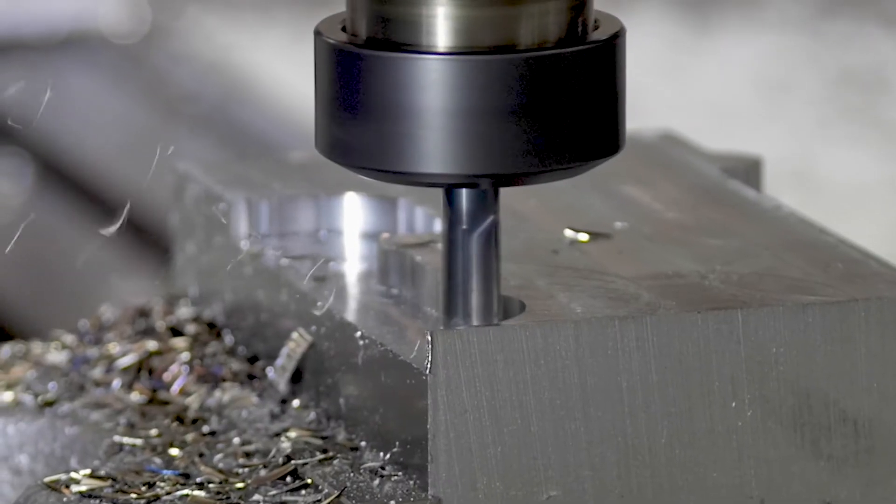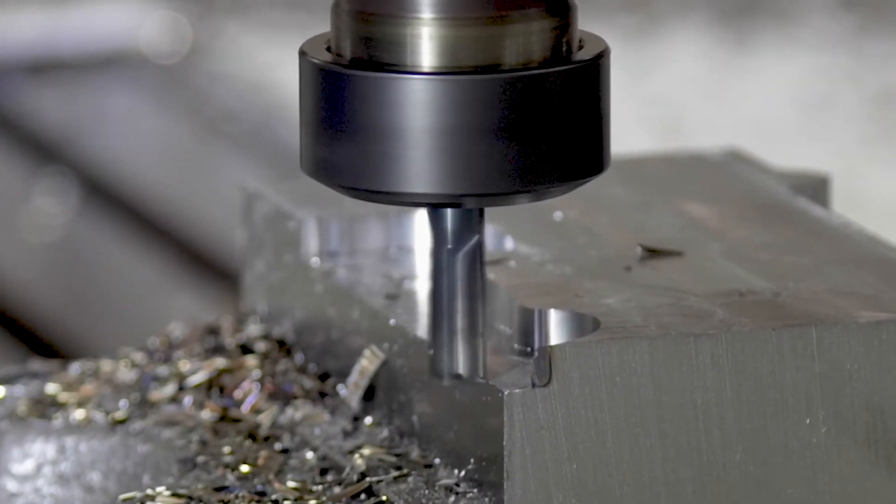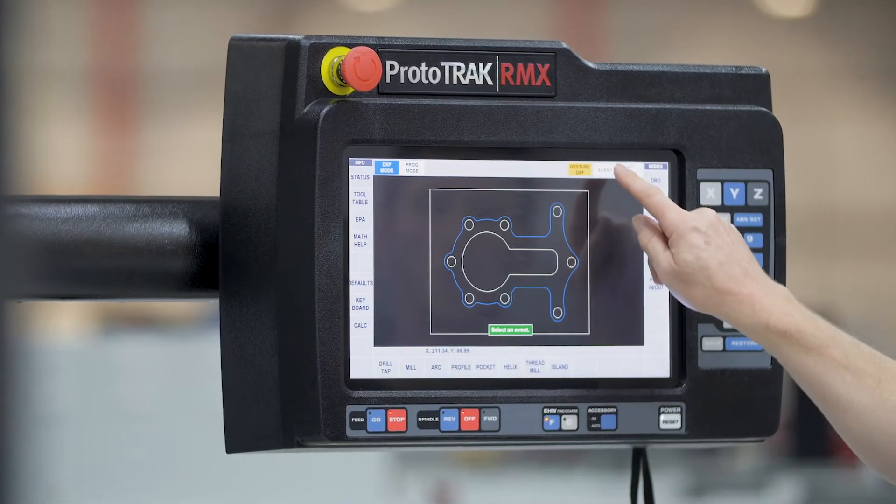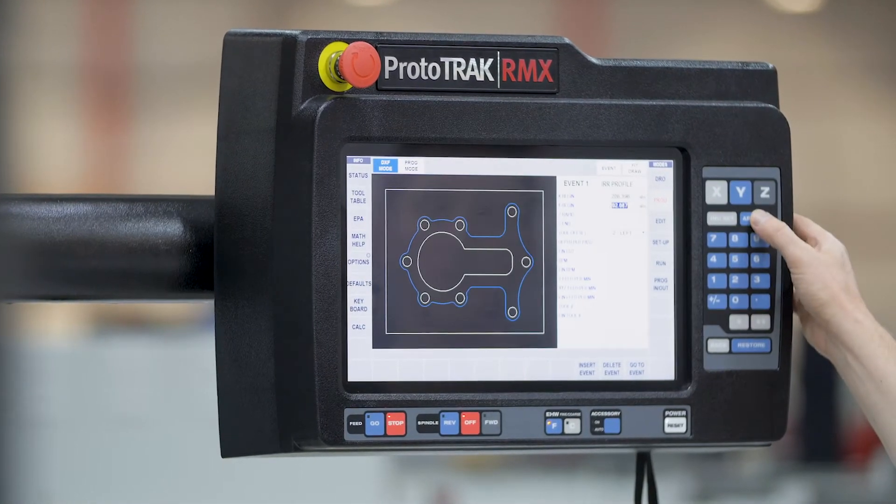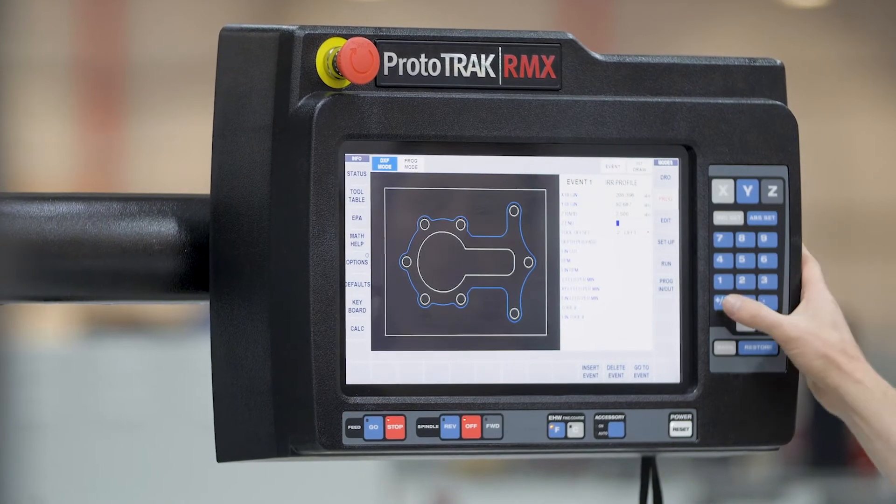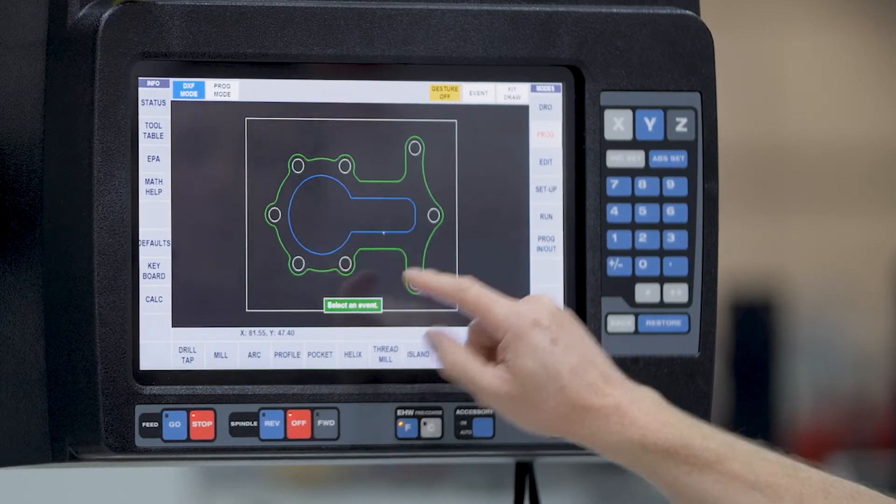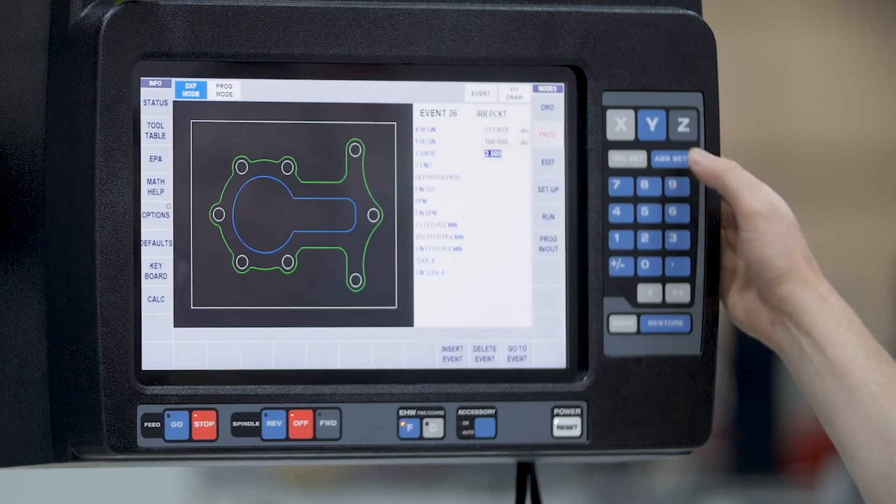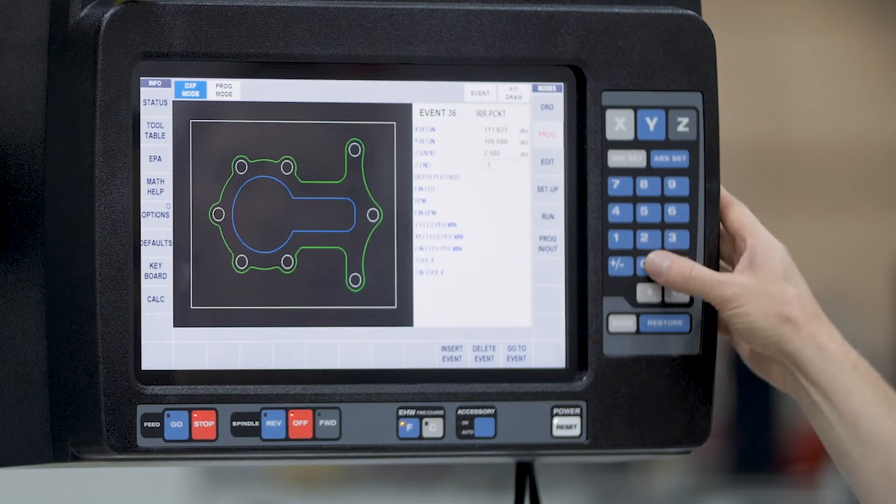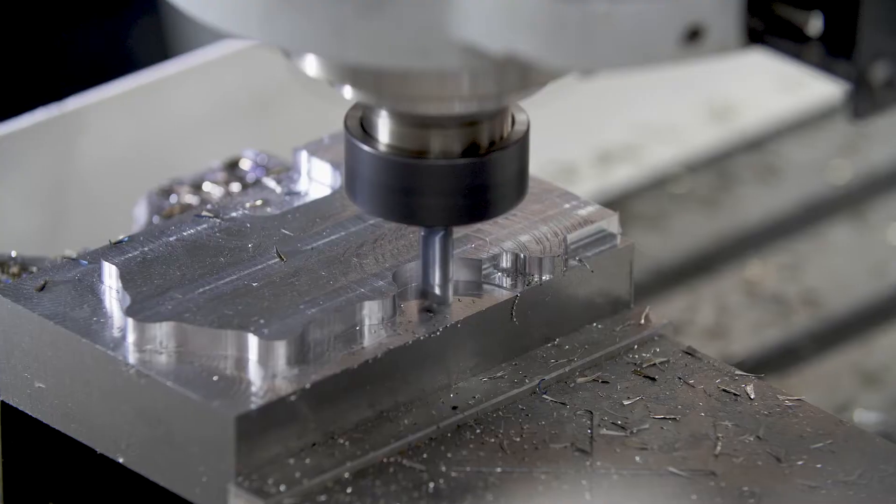The latest generation of Prototrack RMX three-axis control provides maximum operator productivity, particularly on one-off components or small batches. Even an operator with no previous CNC experience will be producing simple or complex parts within hours, just after one day of training.